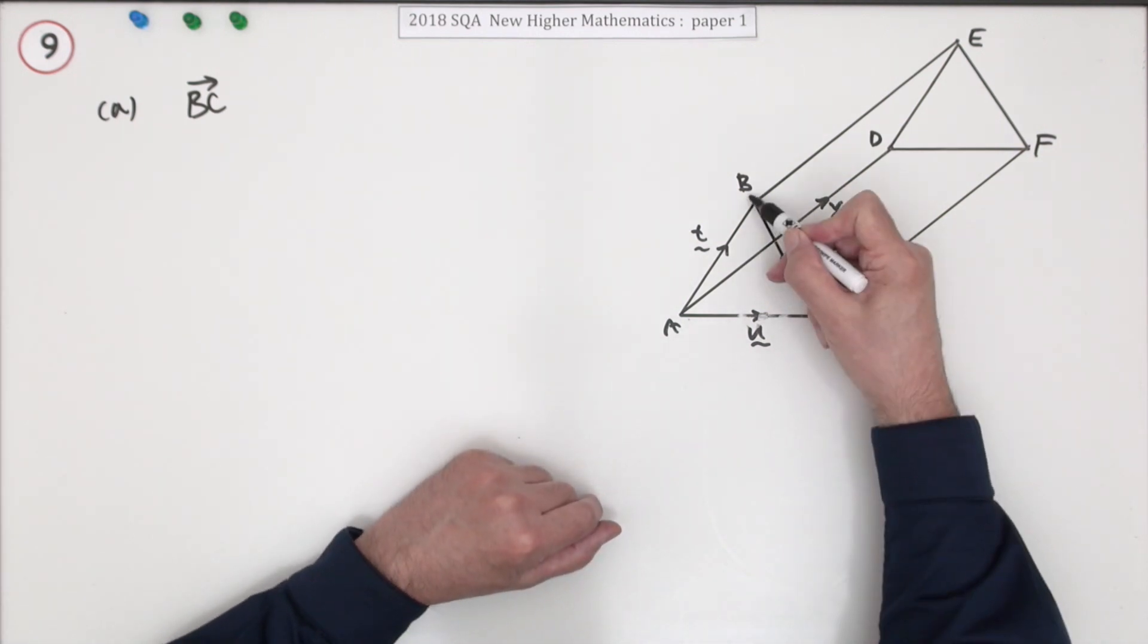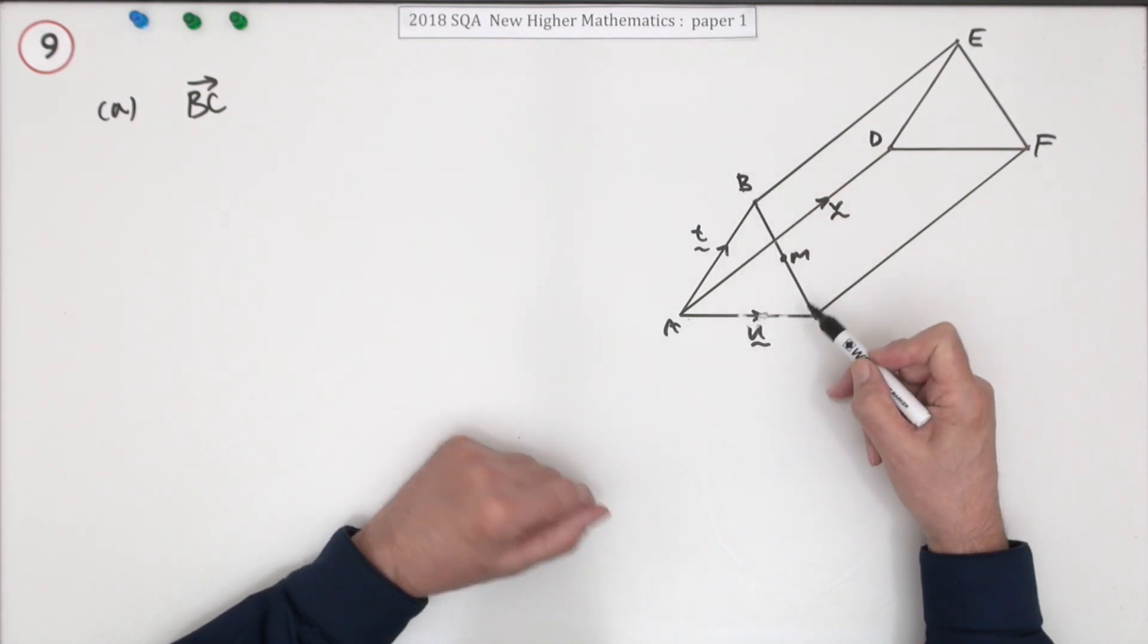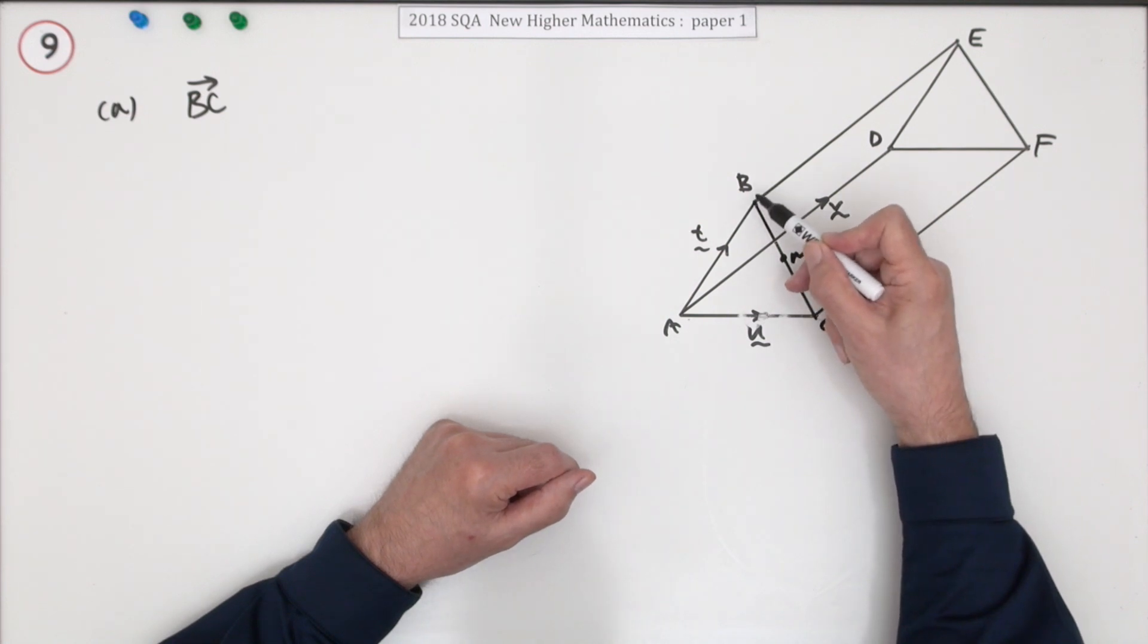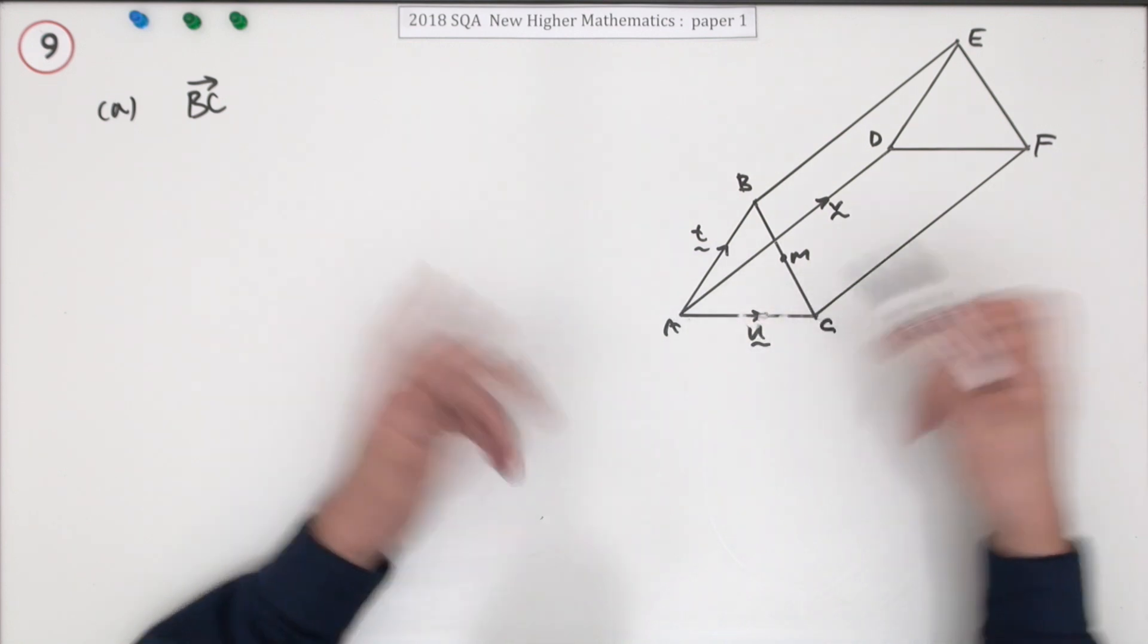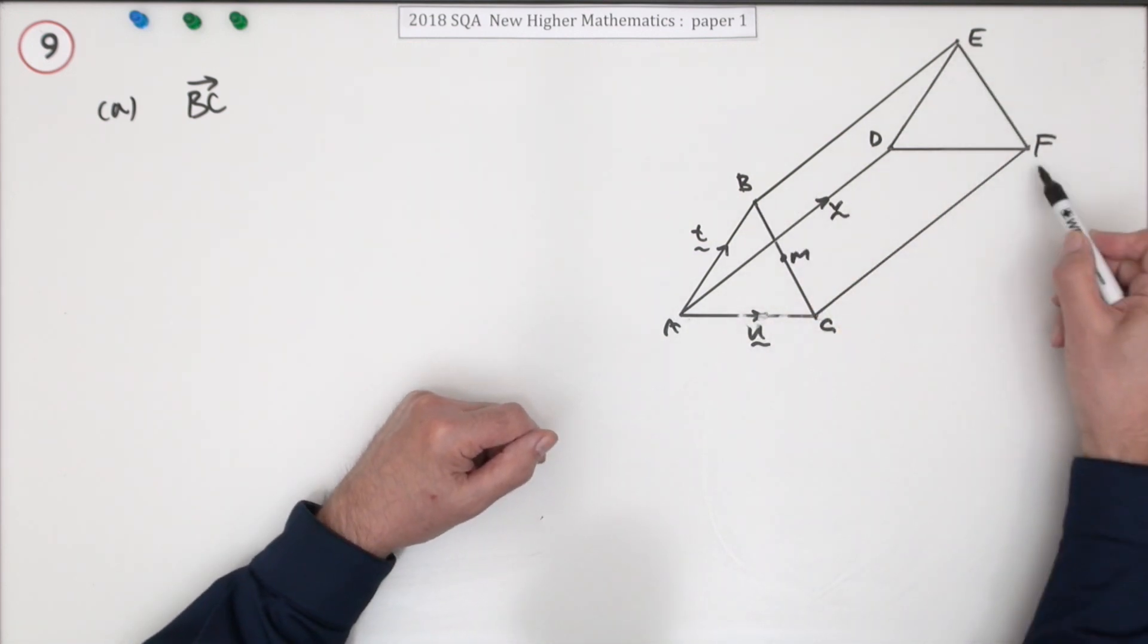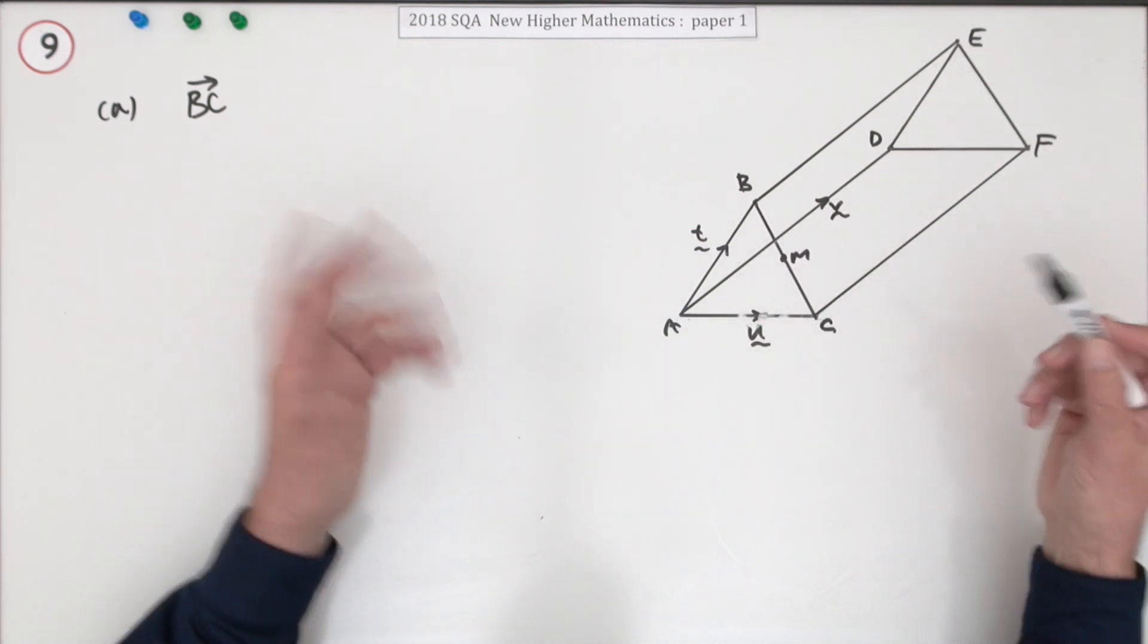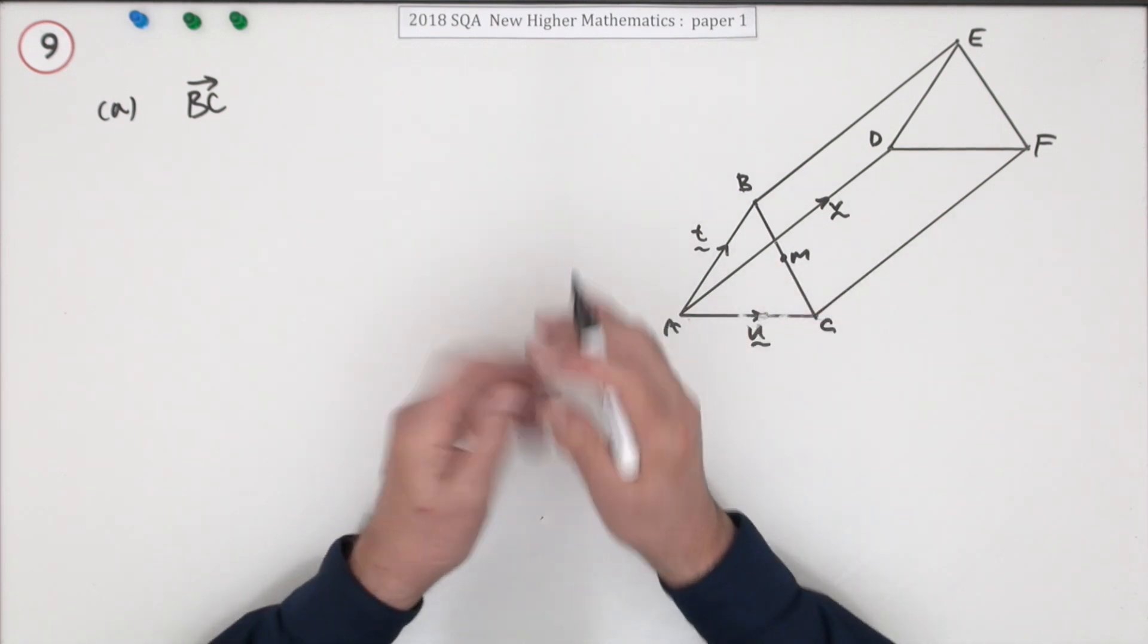Well, just figure out a path. If you want BC, then what other route could you find that would take you from B to C? And it says in terms of T and U, so that's the path I'm going to follow. You can go where you like. You could go way over there and down and back. You can follow any path you like. It'll always give the same answer.